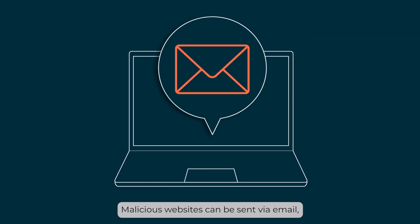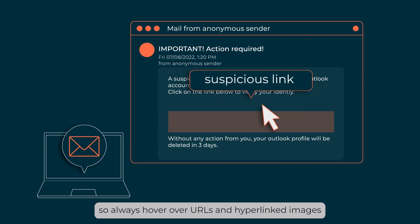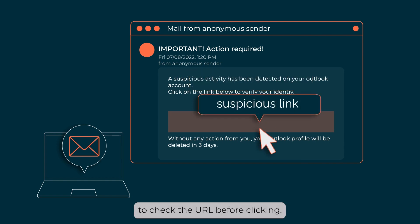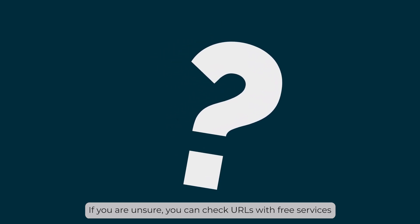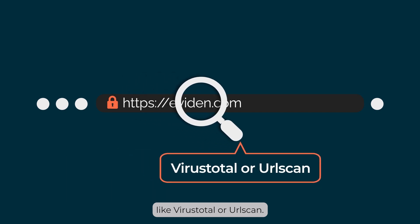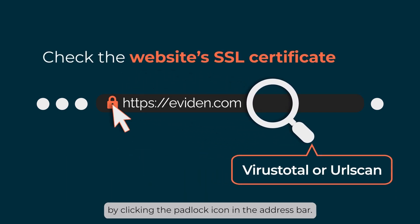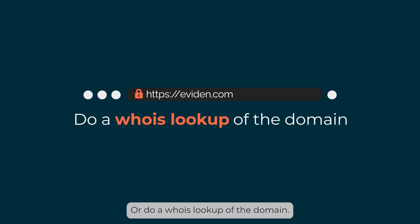Malicious websites can be sent via email, so always hover over URLs and hyperlinked images to check the URL before clicking. If you are unsure, you can check URLs with free services like VirusTotal or URL scan. Check the website's SSL certificate by clicking the padlock icon in the address bar, or do a Whois lookup of the domain.